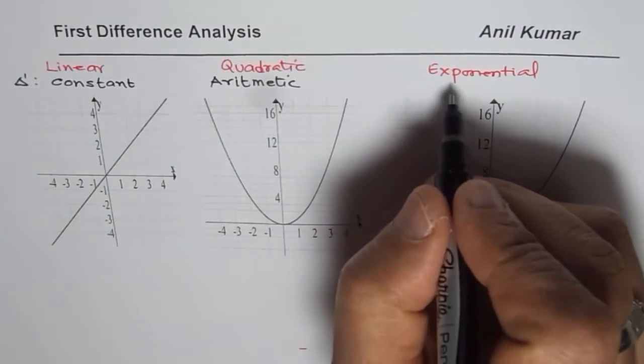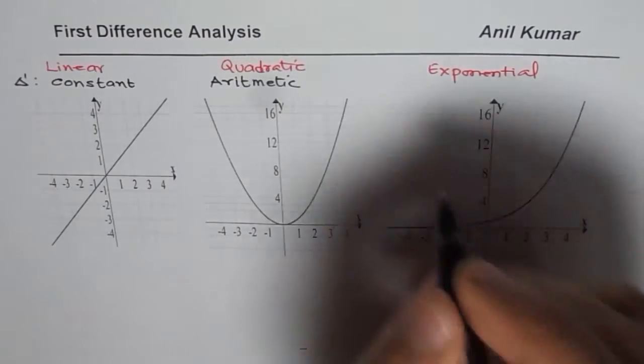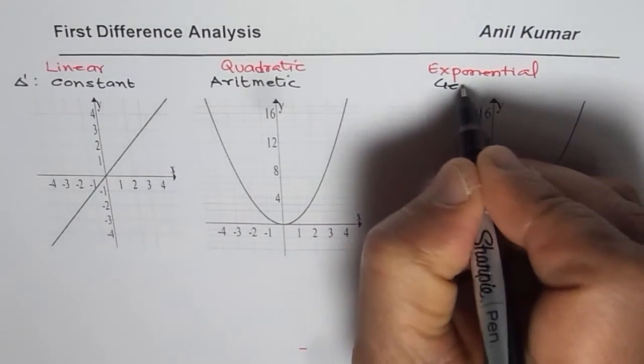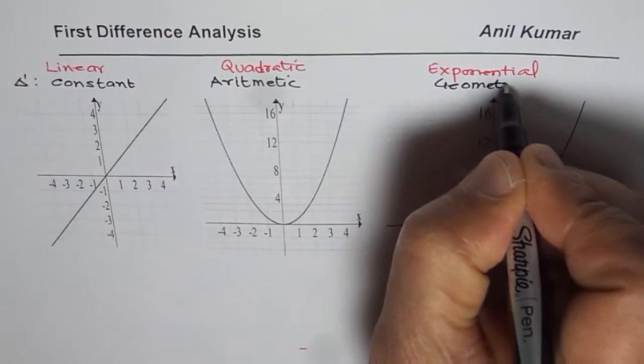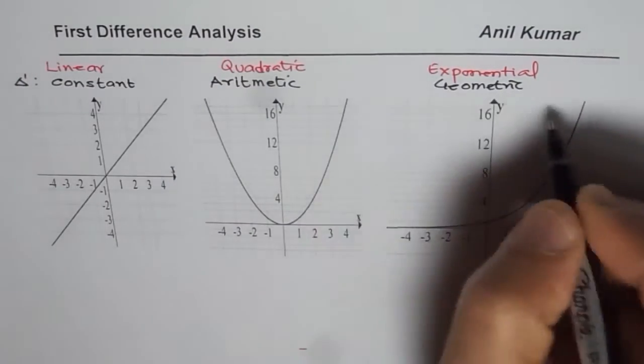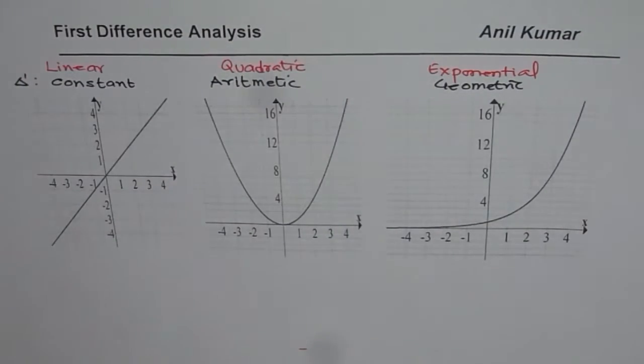And in case of exponential graphs, we will get geometric pattern for the first difference. Now let us see what does it really mean.